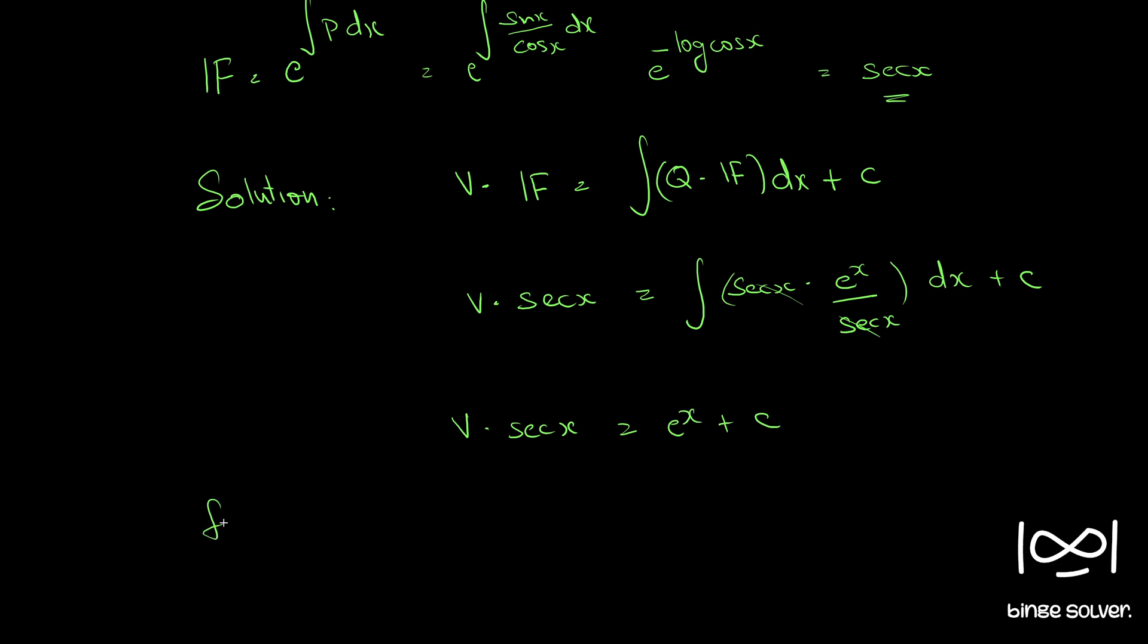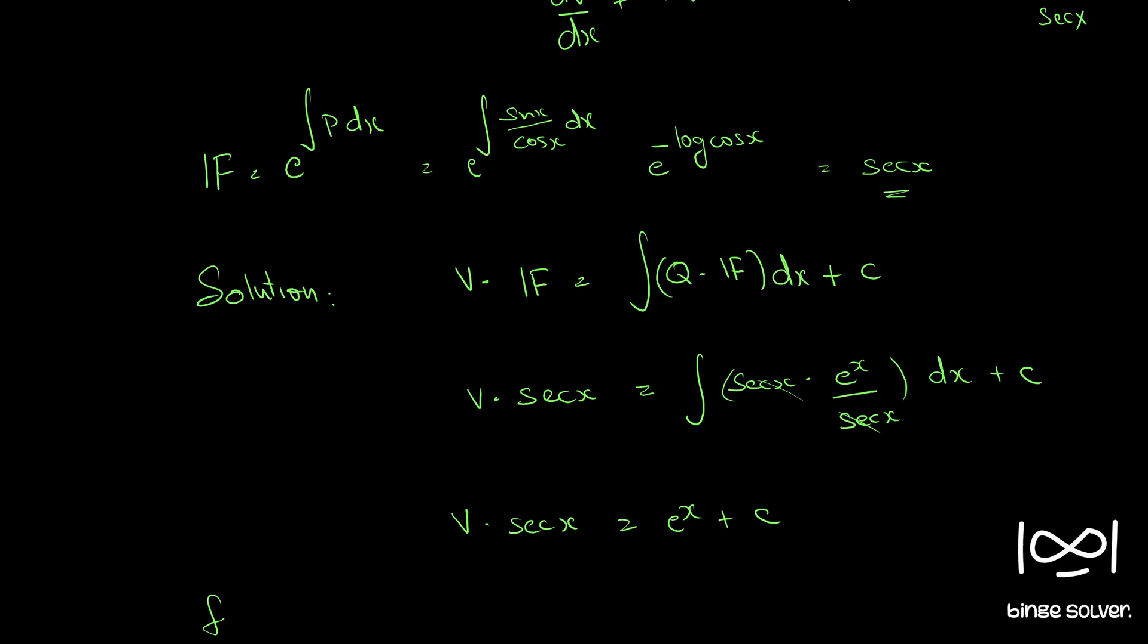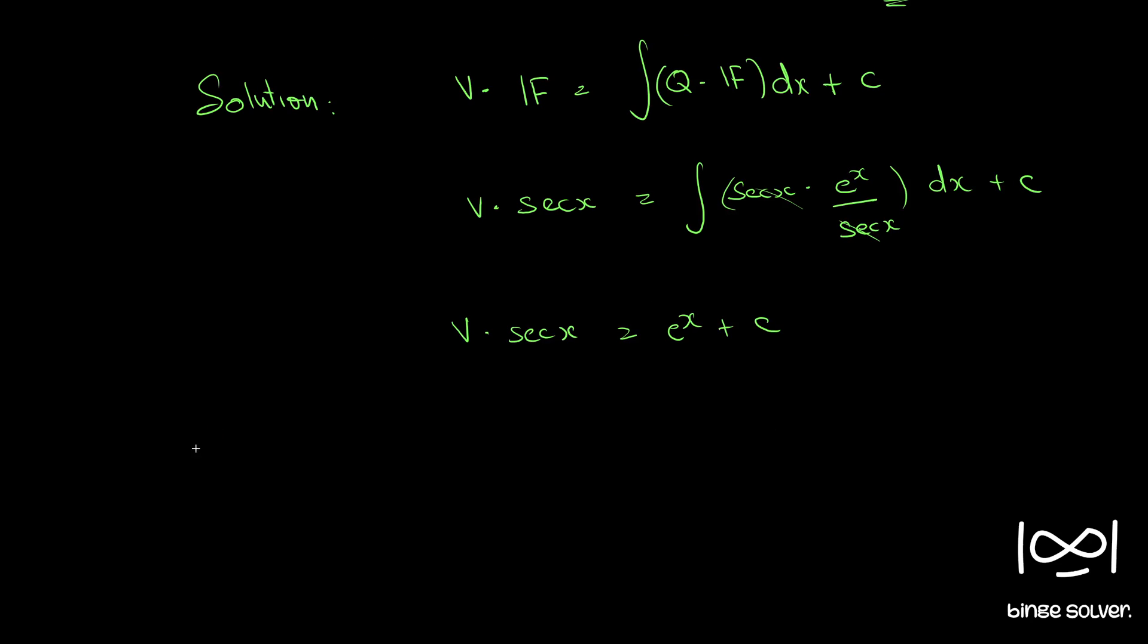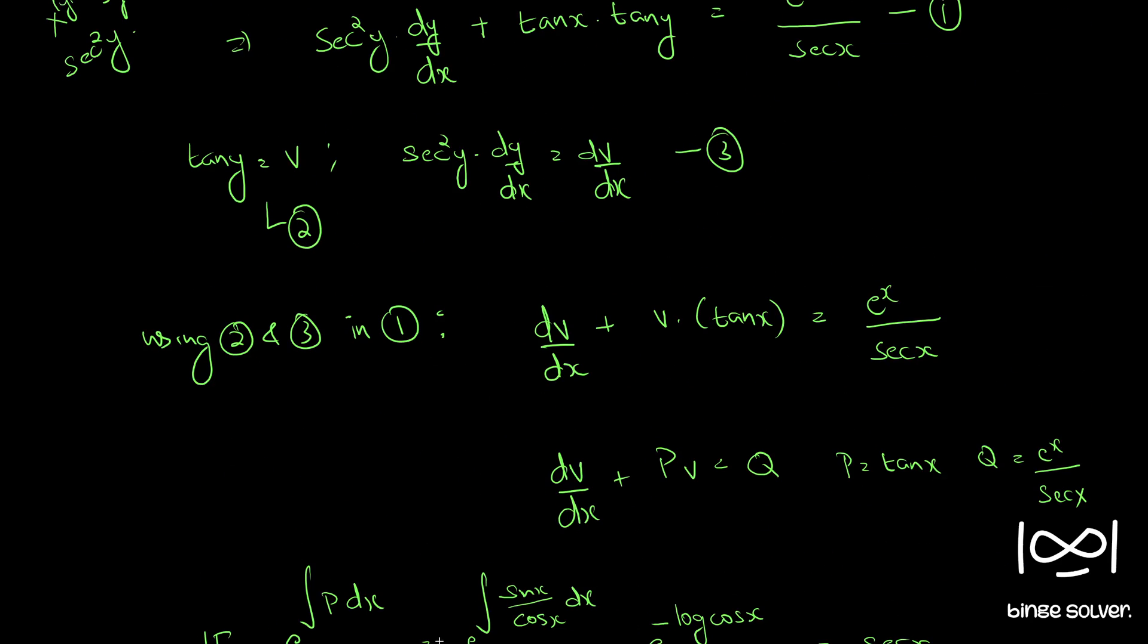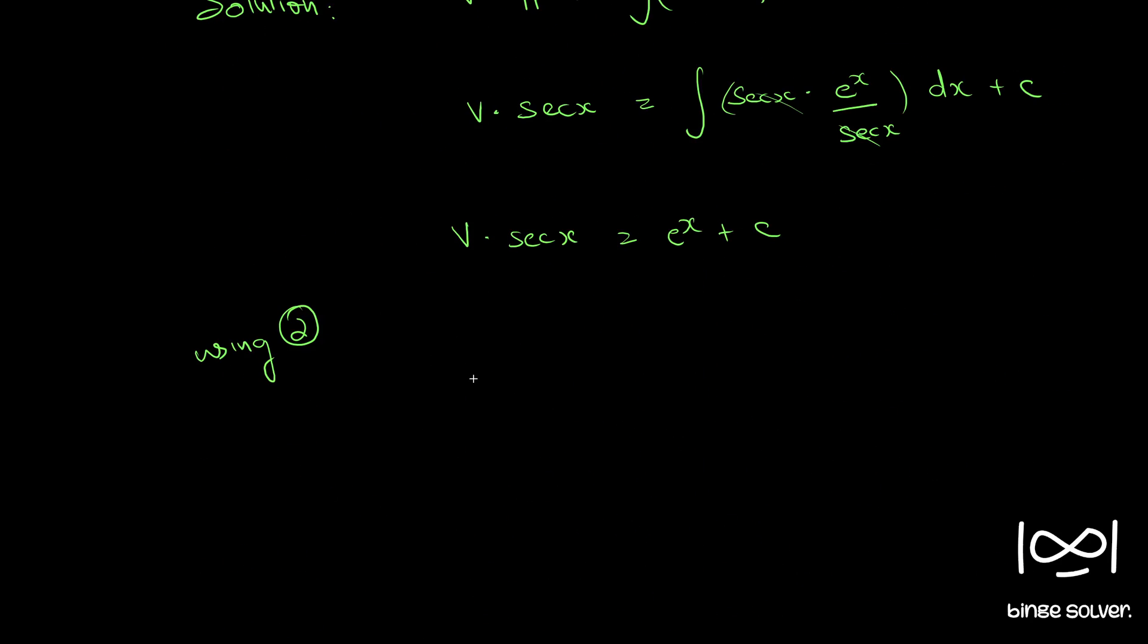From equation 2, using 2 we have v equal to tan y, so substituting we have tan y into sec x is equal to e raised to x plus c.